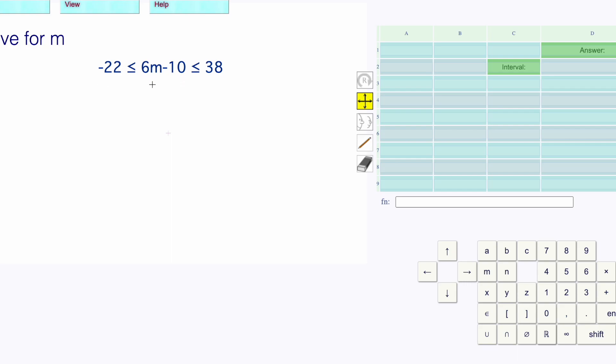Here's a level 12 type question. I'm going to break this into two inequalities. I'm going to solve the first one by adding 10 to both sides. That gives us 12 is less than or equal to 6m.